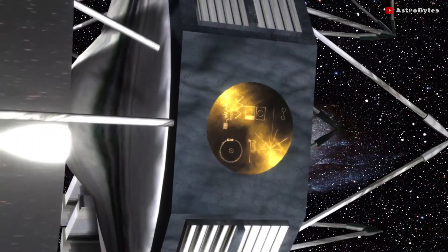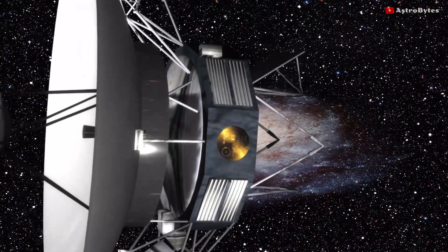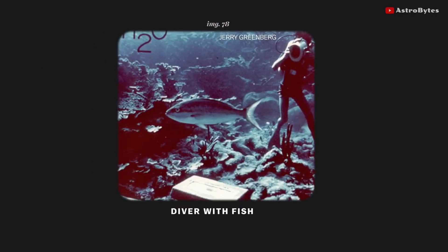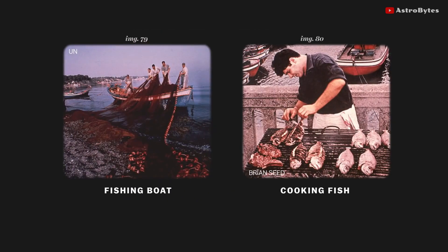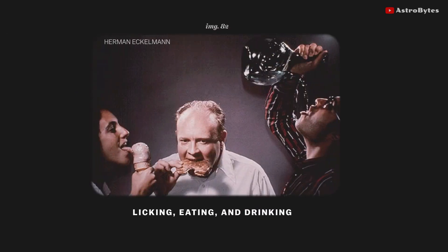The Voyager spacecrafts also contains two phonograph records. These records contain sounds and images selected to portray the diversity of life and culture on Earth. They are intended for any intelligent life form who may find them.